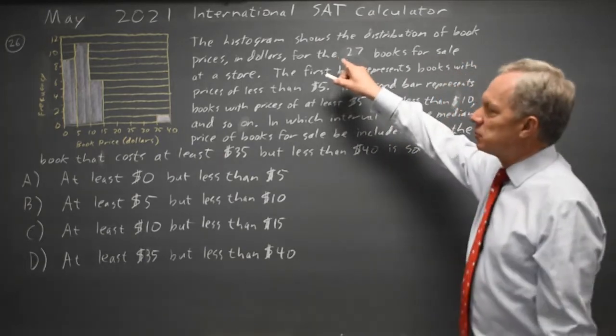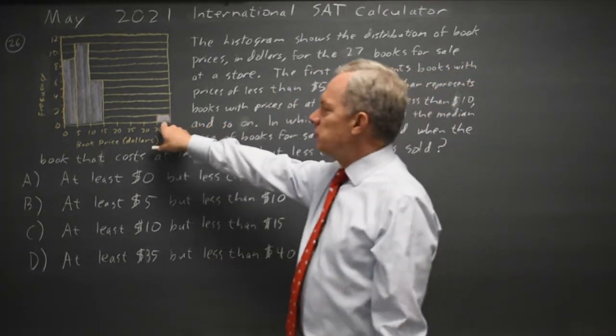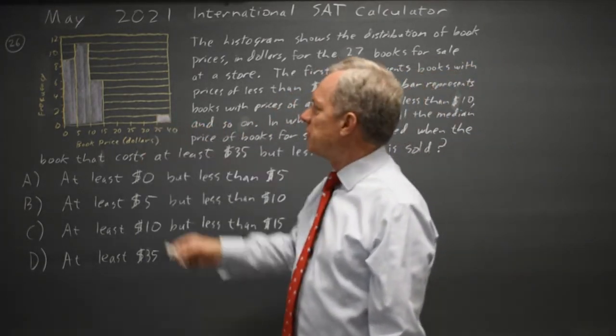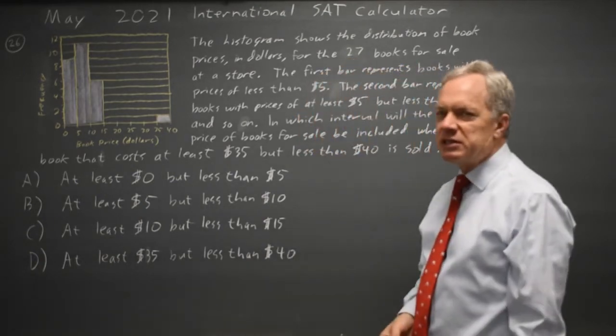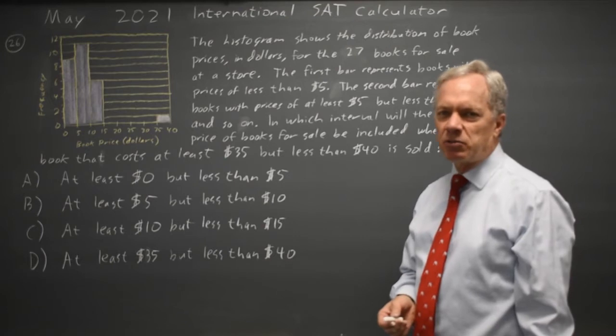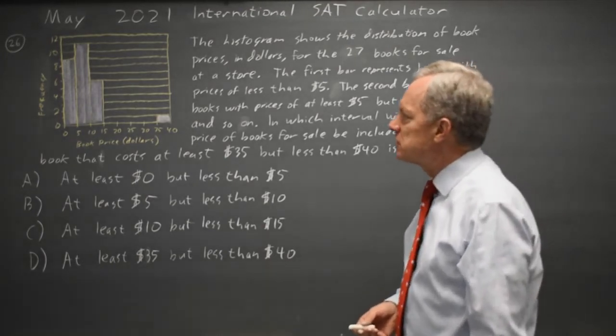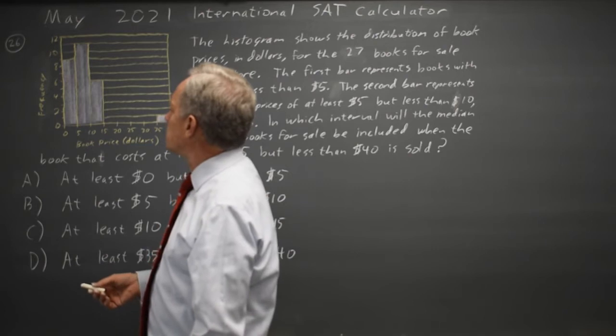We have a total of 27 books. We remove the most expensive book so we have 26 books remaining. The median of 26 numbers is the middle number when they're listed from smallest to largest. So there will be 13 below and 13 above.